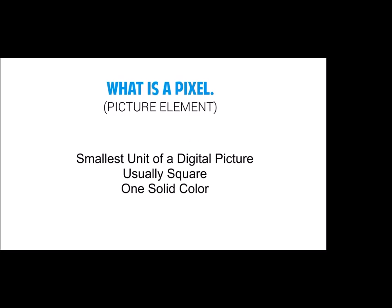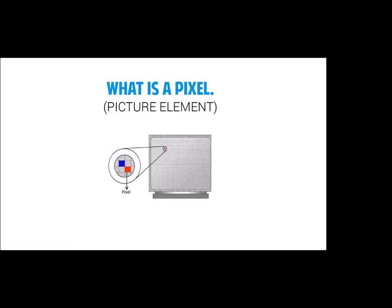The basics: Photoshop is a pixel-based or pixel-manipulation tool. A pixel — picture element — is the smallest unit of a digital picture, usually square but not always. When you really zoom in on a picture it's all these little blocks. Each block is an individual cell or element of the screen, and each one is one solid color.